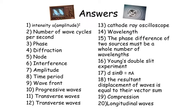Number 11: transverse waves. Number 12: transverse waves. Number 13: cathode ray oscilloscope. Number 14: wavelength. Number 15: the phase difference of two sources must be a whole number of wavelengths. Number 16: Young's double slit experiment. Number 17: d sin theta equals n lambda. Number 18: the resultant displacement of waves is equal to their vector sum. Number 19: compression. Number 20: longitudinal waves.